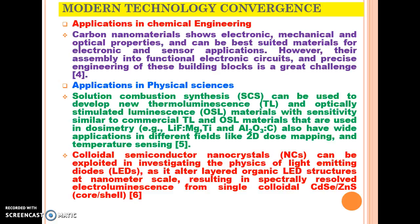In the next session we will describe modern technology convergence. The term luminescence has applications in various fields of basic science. In chemical engineering, various researchers and scientists across the world have carried out research on this topic. Carbon nanomaterial materials show electronic, mechanical, and optical properties and can be best suited materials for electronic and sensor applications, though their assembly into functional electronic circuits and precise engineering remains a great challenge. In physical sciences, solution combustion synthesis can be used to develop new thermoluminescence and optically stimulated luminescence materials with sensitivity similar to commercial OSL materials used in dosimetry.